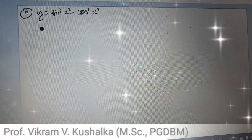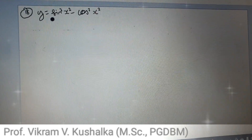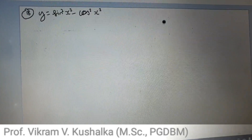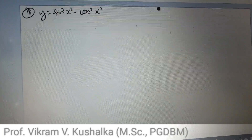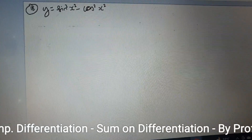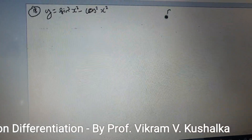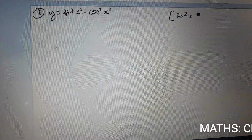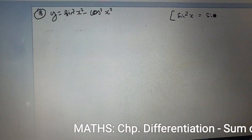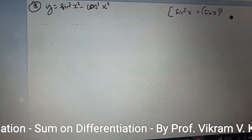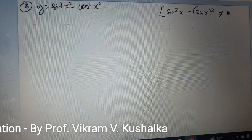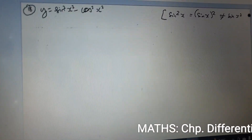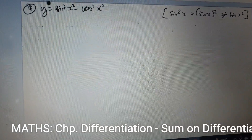Now we are going to see how to differentiate the function y = sin²(x²) - cos²(x²). The first important property to remember is that sin²(x²) can always be written as (sin x²)², the whole square — but this is not equal to (sin x)². Remember that. This is the property we are going to use here.